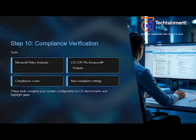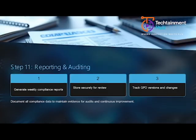CIS-CAT Pro is developed by CIS to assess compliance automatically. It evaluates your system against benchmark settings and provides a percentage score. Its reports are crucial for continuous monitoring and audit readiness.